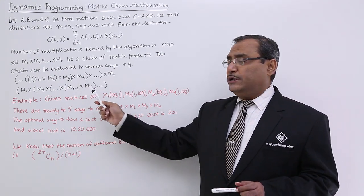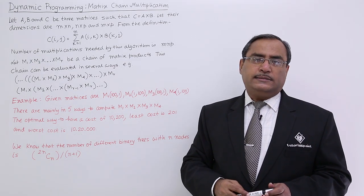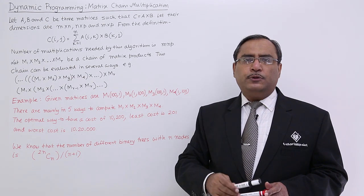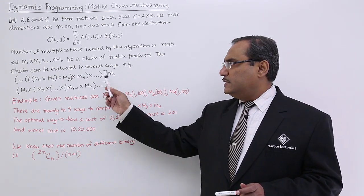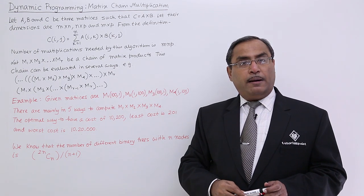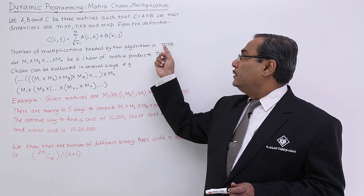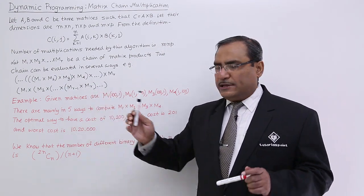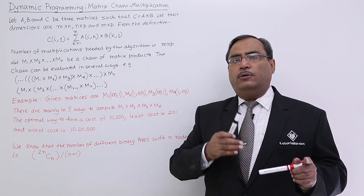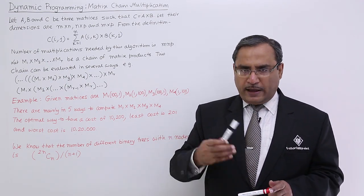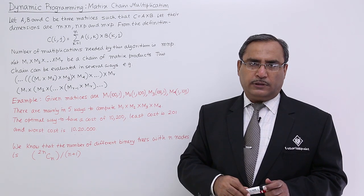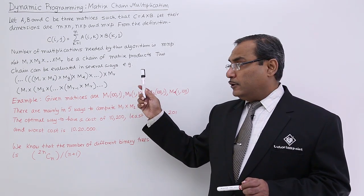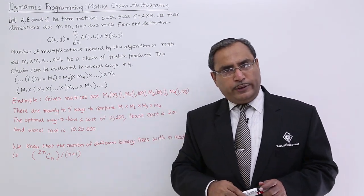These two sequences cannot have the same complexity, because depending upon the sequences and the dimensions of the respective matrices participating in the multiplication, the number of products required will also vary. Different associations of matrices for multiplication will incur different complexity values, totally dependent upon the sequence in which we perform the multiplication.